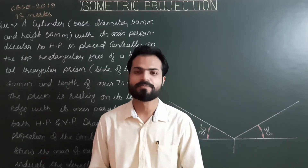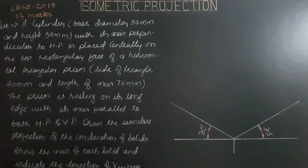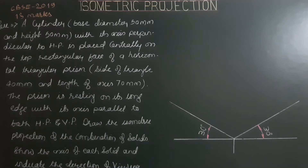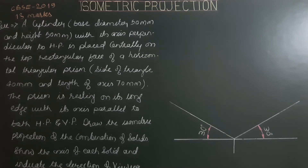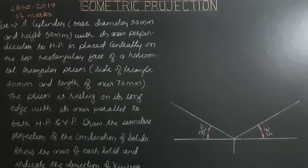Hello everyone, hope you are doing good. Today we have one more problem from a previous question paper. This question was asked in 2019 for 13 marks. A cylinder with base diameter 50 mm and height 50 mm, with its axis perpendicular to HP, is placed centrally on the top rectangular face of a horizontal triangular prism with side of triangle 40 mm and length of axis 70 mm. The prism is resting on its long edge with its axis parallel to both HP and VP. Draw the isometric projection of the combination of solids, show the axis of each solid, and indicate the direction of viewing.